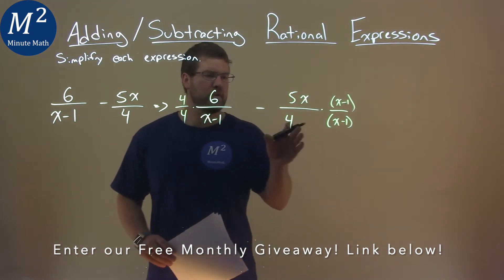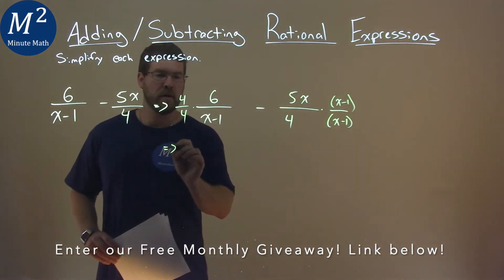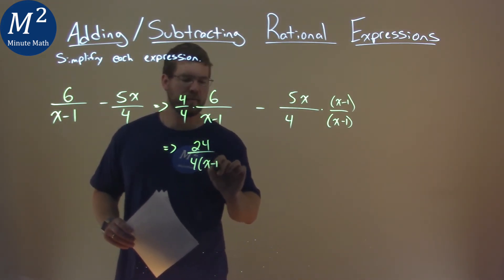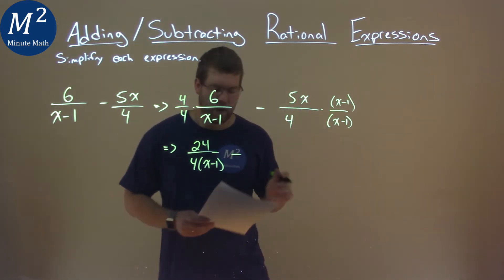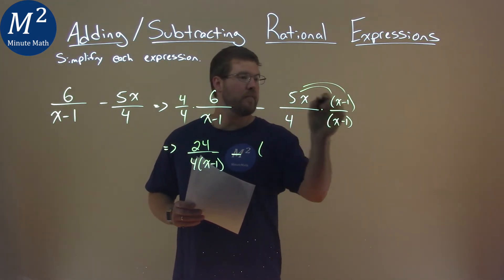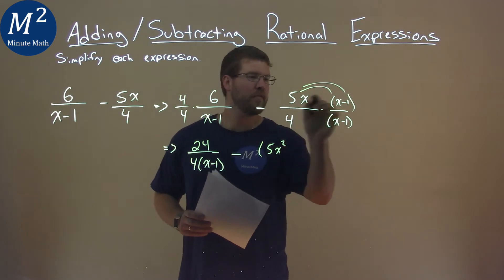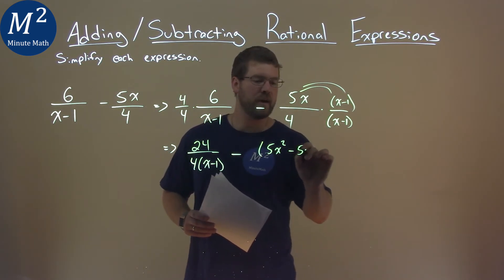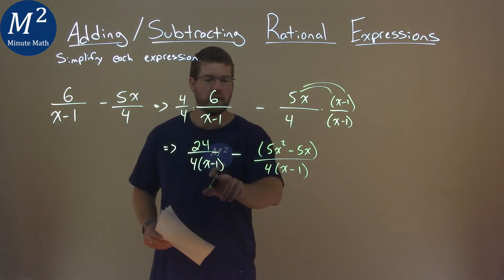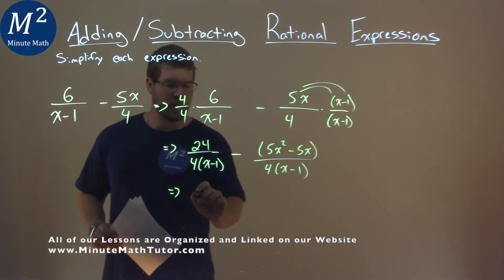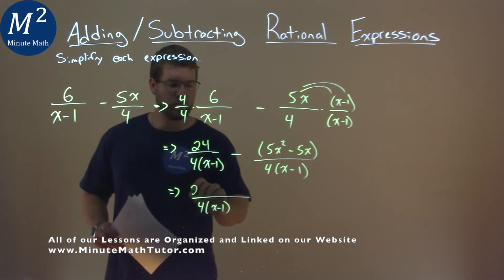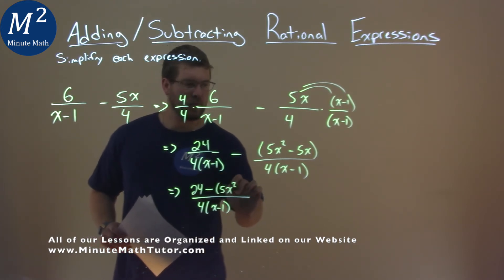Let's simplify the numerator: 4 times 6 is 24, and we have a 4 times (x minus 1) here. Then we're subtracting 5x times (x minus 1); we distribute this out — 5x times x is 5x squared, and 5x times negative 1 is negative 5x. That's all over 4 times (x minus 1). We now have the same denominator, so we can combine these. The denominator is 4 times (x minus 1), and the numerator is 24 minus 5x squared minus 5x.